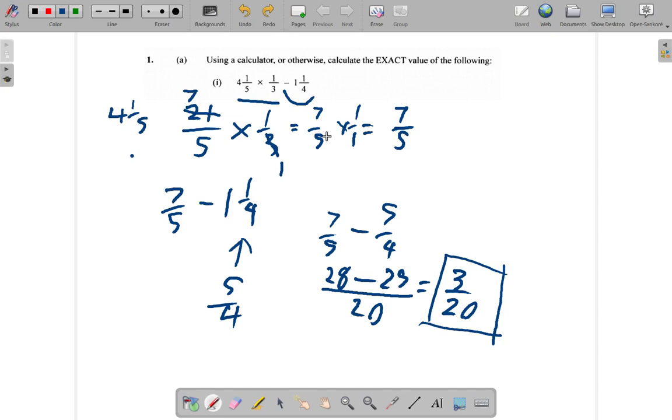Let's do it over here. 4 and 1 fifth is really 4 wholes plus 1 fifth. But, how did we get the 7 fifth? Alright? Remember? Remember? No. Not 7 fifth. The 21 fifth. I mean. It's my mistake. We had 4 and 1 fifth become 21 fifth. When we turned the mixed fraction into improper fraction. We said 5 times 4 is 20 plus 1, 21.